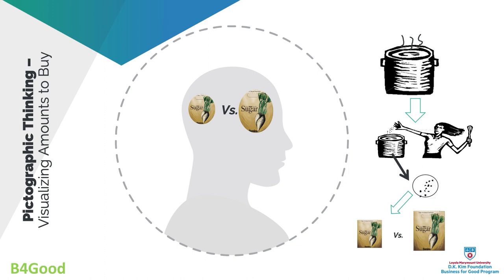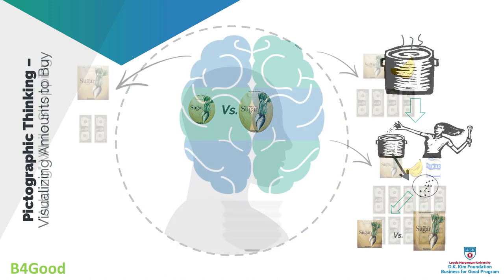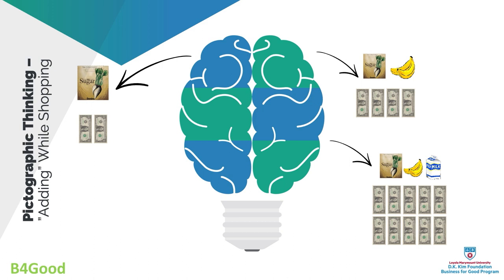Another way pictographic thinking manifests is in how much to buy. Unit of measurement is very difficult when you have low literacy, so what do people do? They visualize — if I'm baking a cake I need sugar, so they imagine themselves making the cake, pouring sugar in, imagine how much they poured, and buy the package that matches that image. If the package is half empty and looks large, they're going to buy much less than they need and pay more for it.